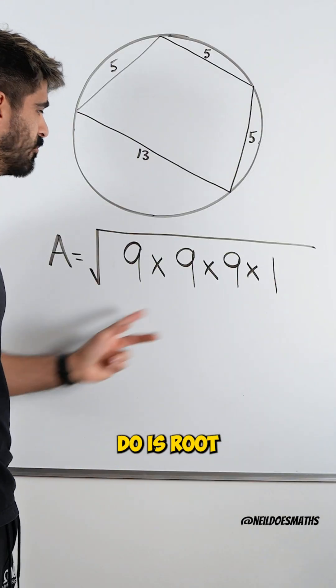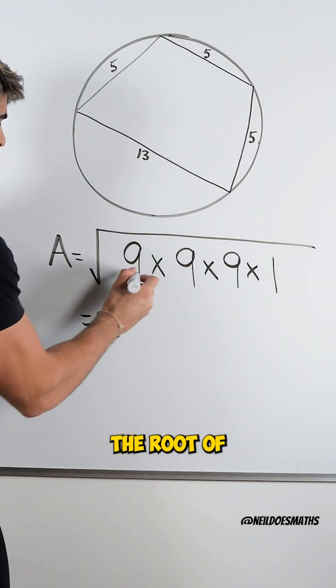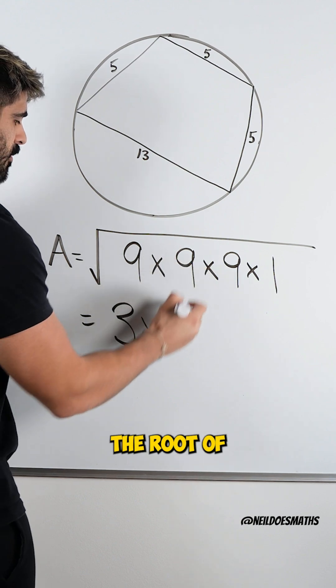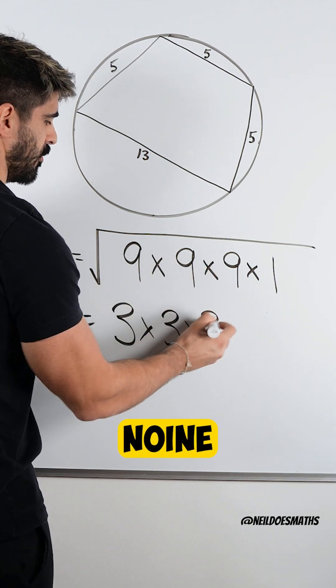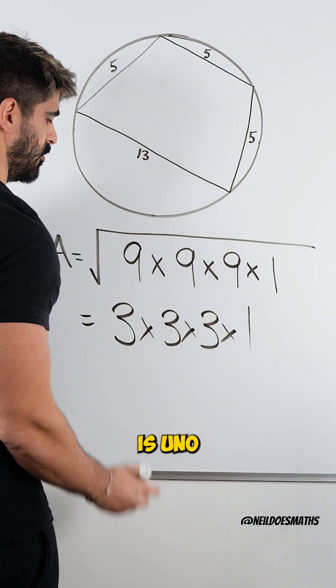Now all we need to do is root all of these numbers. The root of 9 is 3, the root of 9 is 3, the root of 9 is 3, the root of 1 is 1.